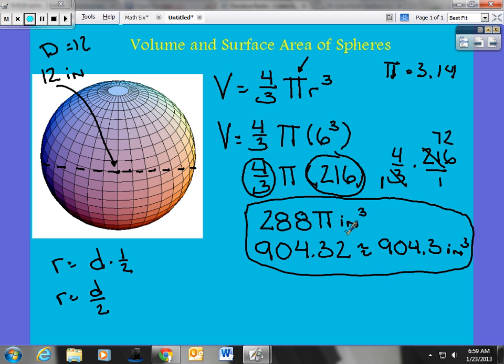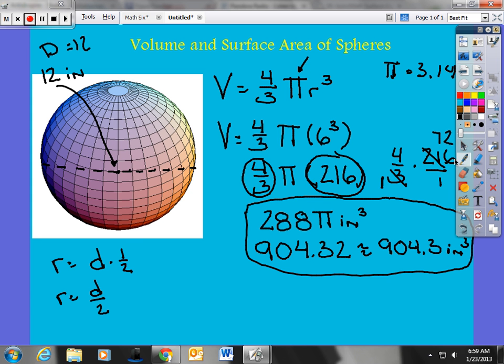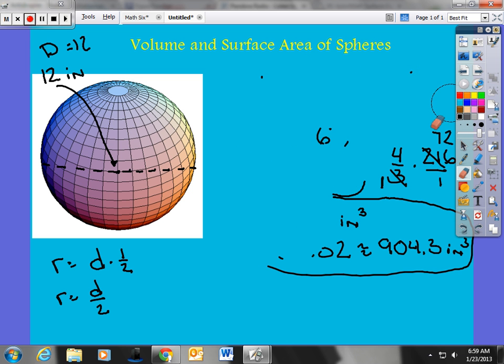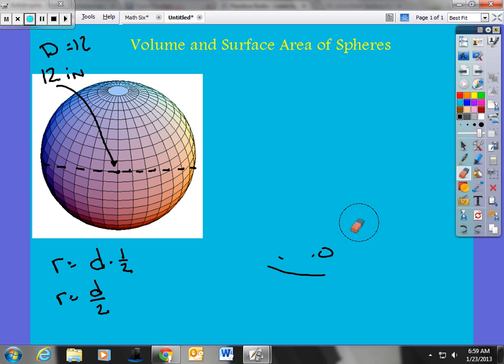That is for volume. Now, I'm going to erase this stuff. I'm going to come now with the surface area formula. I'm going to keep the same shape and actually the same diameter slash radius to kind of help us expedite the process here. Surface area. This might help if you're ever, one day in the future, wrapping a globe or a basketball up for somebody as a gift.